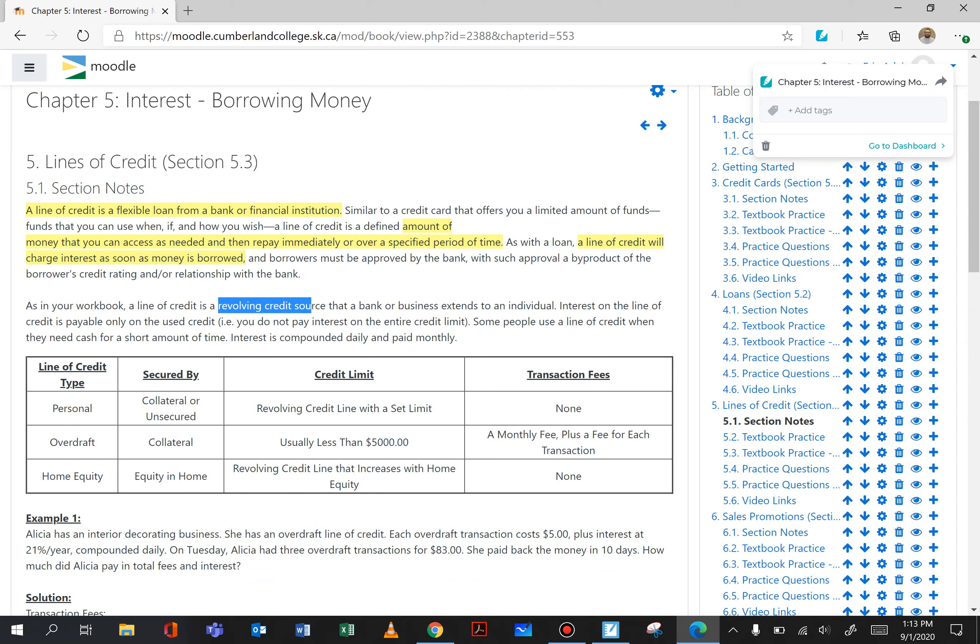So it is a revolving credit source. Remember that revolving means that your balance can go up and down. If I have a line of credit and I use a thousand dollars my balance is a thousand. If I pay back five hundred my balance is five hundred. If I then use another seven hundred my balance is now twelve hundred and my balance then can go up and down or revolve. So once again interest on the line of credit is payable only on the used credit.